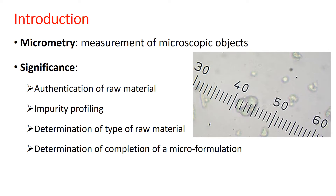If you have ordered rice starch and the supplier has provided potato starch, under the microscope with the help of micrometry you will be able to distinguish between them. Remember, in this case you cannot use the iodine test because both starches will test positive for iodine. This is the only method to distinguish between different types of starches.